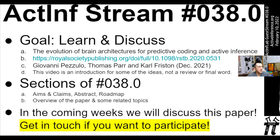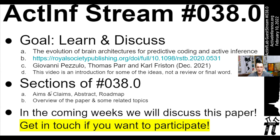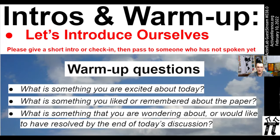Today in ActInfStream number 38, the goal is to learn and discuss the paper 'The Evolution of Brain Architectures for Predictive Coding and Active Inference,' by Giovanni Pizzullo, Thomas Parr, and Karl Friston from December 2021. This video is just an introduction to some of the ideas — not a review or final word — so go check out the paper to learn more. There will be an overview with aims, claims, abstract, and roadmap.